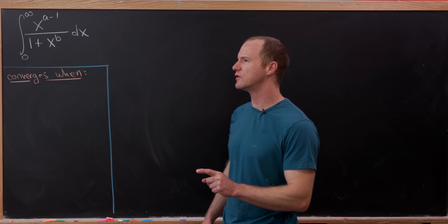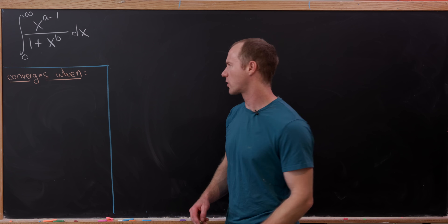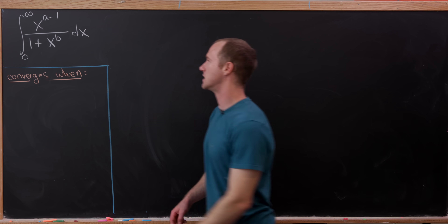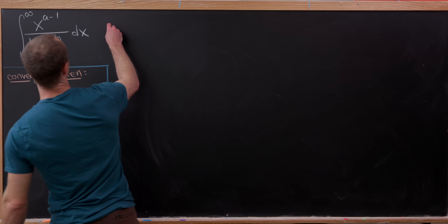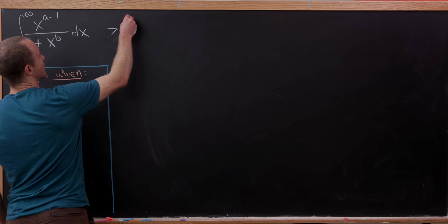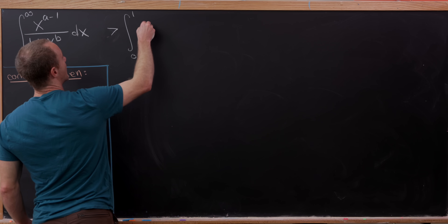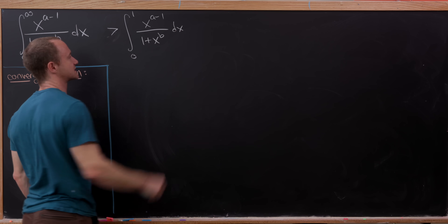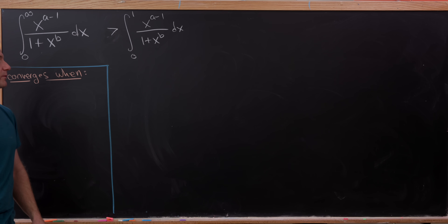The first thing to notice is that if a is negative, we do not get convergence. For that, we only need the integral from 0 to 1, but our goal integral is definitely larger than the corresponding integral from 0 to 1. So our integral is bigger than the integral from 0 to 1 of x to the a minus 1 over 1 plus x to the b, dx.